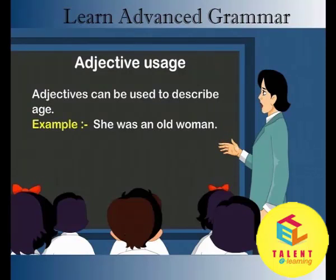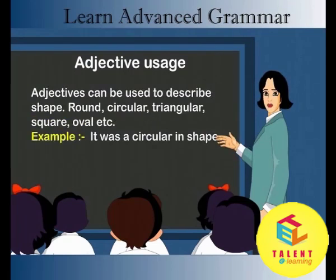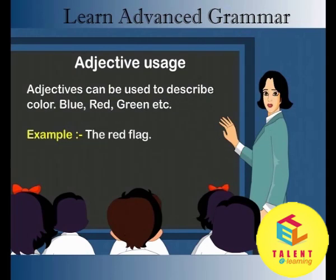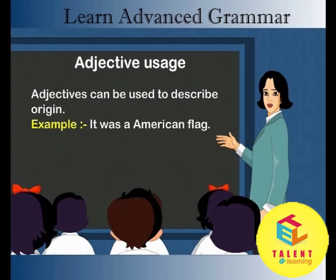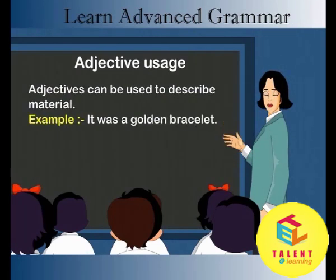Adjectives can be used to describe age. Example: she was an old woman. Adjectives can be used to describe shape: round, circular, triangular, square, oval, etc. Example: it was circular in shape. Adjectives can be used to describe color: blue, red, green, etc. Example: the red flag. Adjectives can be used to describe origin. Example: it was an American flag. Adjectives can be used to describe material. Example: it was a golden bracelet.